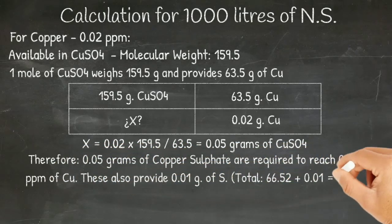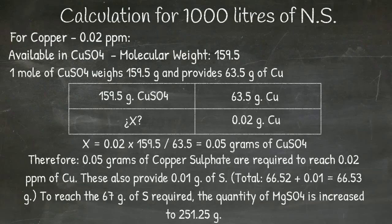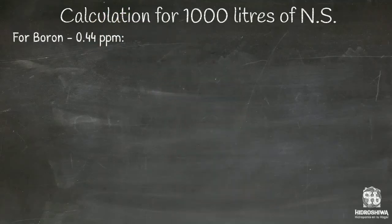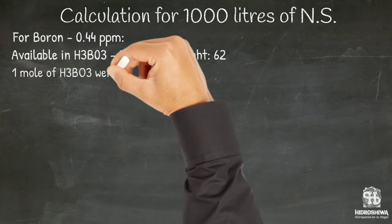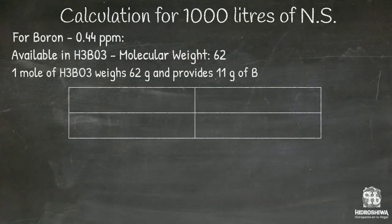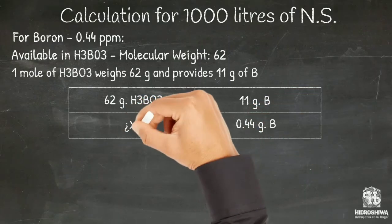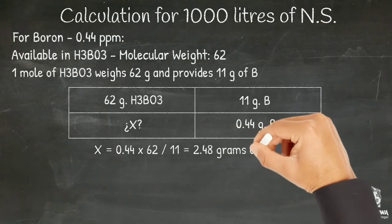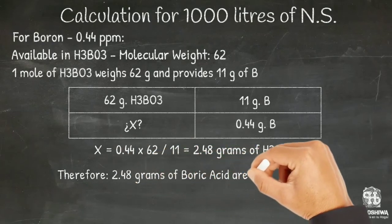To meet the requirement of 67 grams of sulfur, the amount of magnesium sulfate is increased to 251.25 grams. We continue with boron, available in boric acid with a molecular weight of 62. One mole of boric acid weighs 62 grams and provides 11 grams of boron. We calculate the amount of boric acid to provide 0.44 grams of boron: X equals 0.44 times 62 divided by 11, resulting in 2.48 grams of boric acid, required to complete 0.44 parts per million of boron.